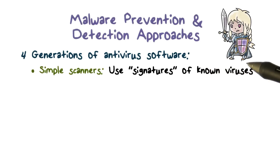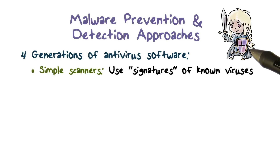The first generation is malware scanners. These scanners use signatures or patterns of known viruses to scan program files to find matches. If there's a match, that means the program file has been infected by a known virus.